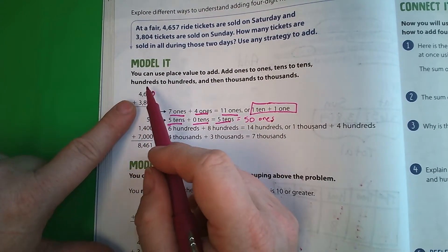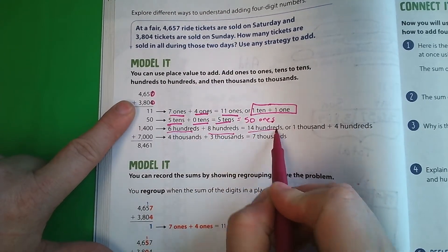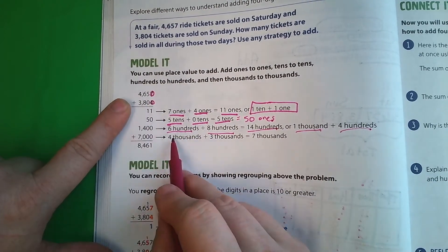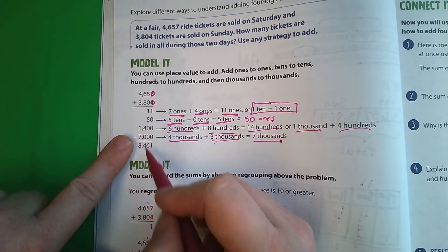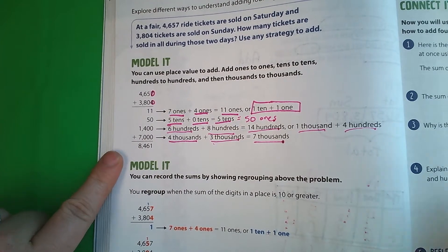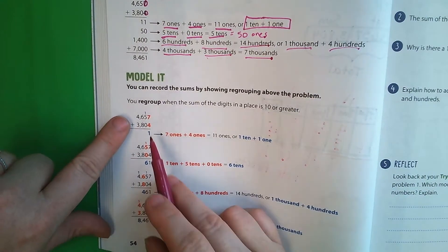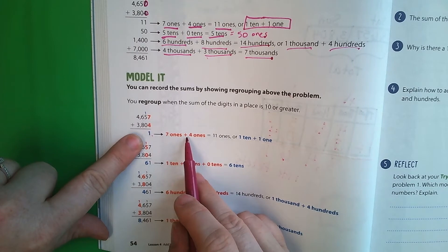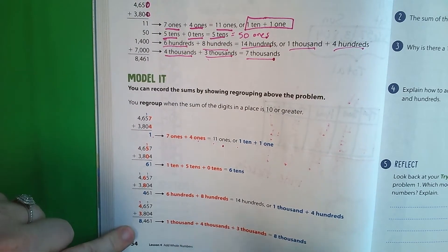Okay, and then we go to the hundreds. It's 6 hundreds and 8 hundreds, which means 1,400 or 1,400. And then our last one is 4,000 plus 3,000 equals 7,000. So then we can add all those up, and our answer is the same. Or down here on the second model, it's the same version as what we did, where we put the 1 down here and carry the other 1. So it's 7 ones plus 4 ones equals 11 ones. It's 1 ten plus 1 one. And this is the way we solved it.